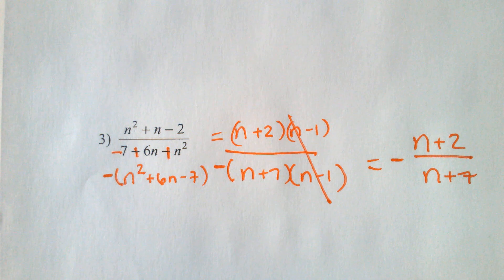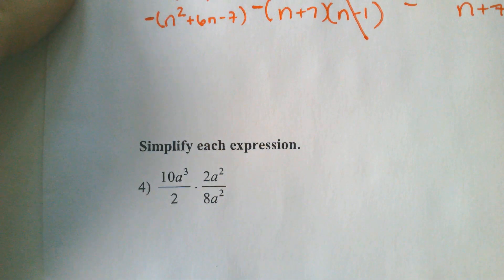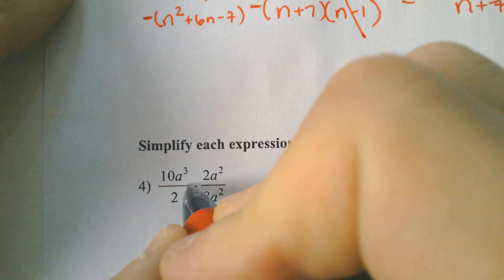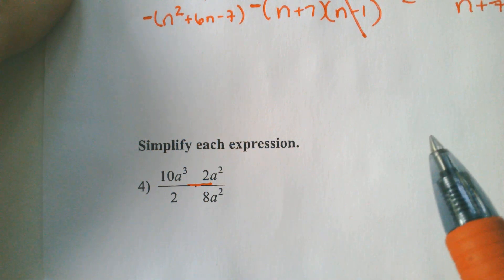All right. We're moving into multiplication now. Multiplication changes nothing. Absolutely nothing from what we were doing before. You just have to think of this as like one big fraction bar essentially. They're multiplied together, but it's one big fraction bar. And then you can simplify everything individually or however you want really.